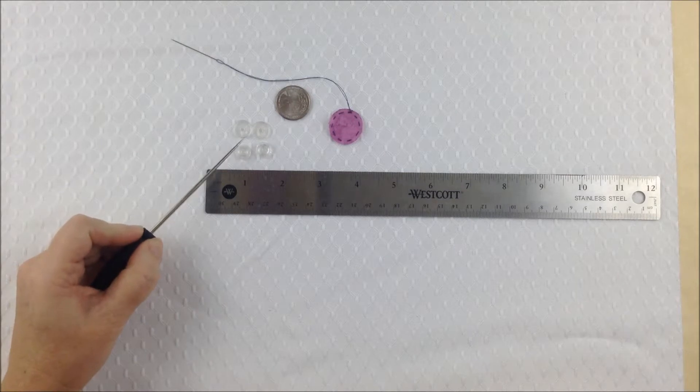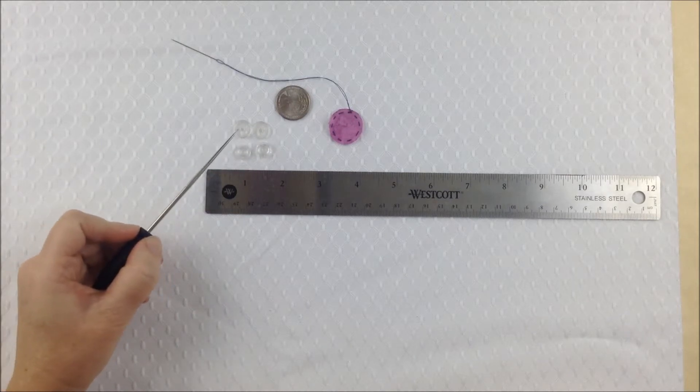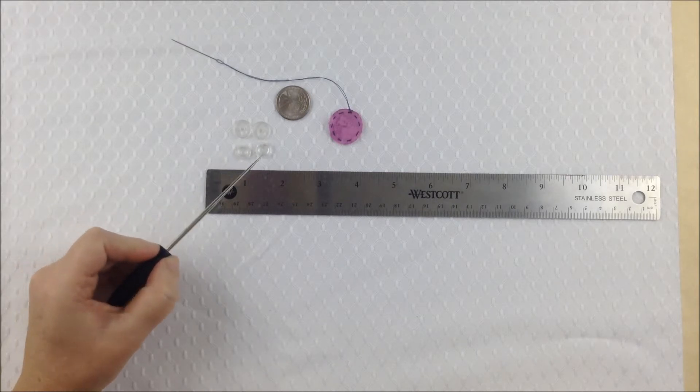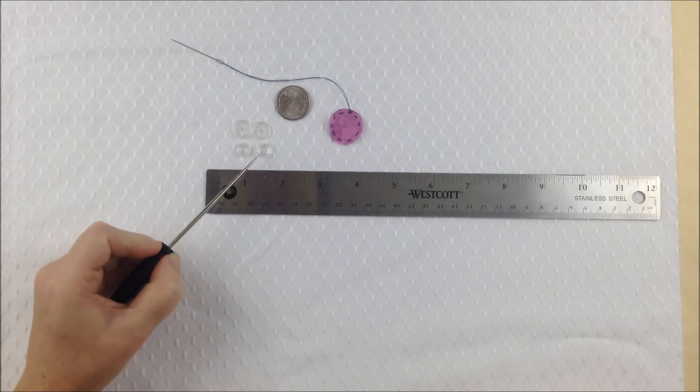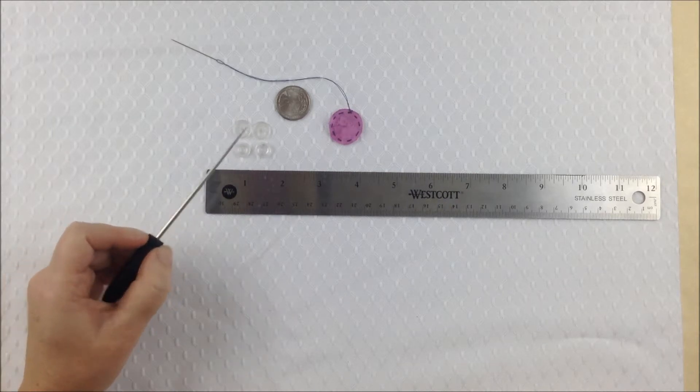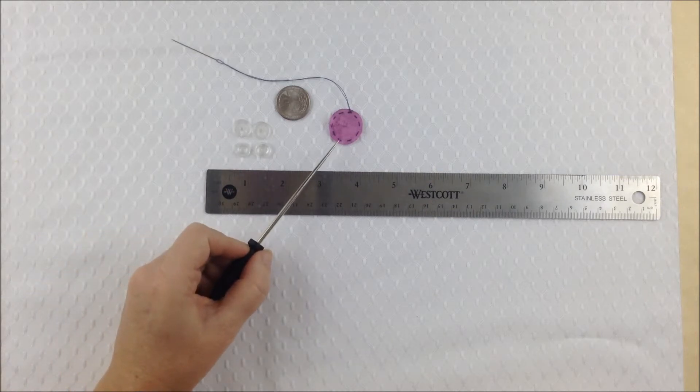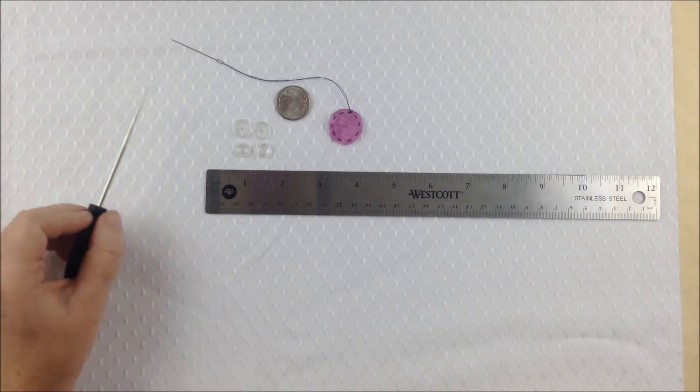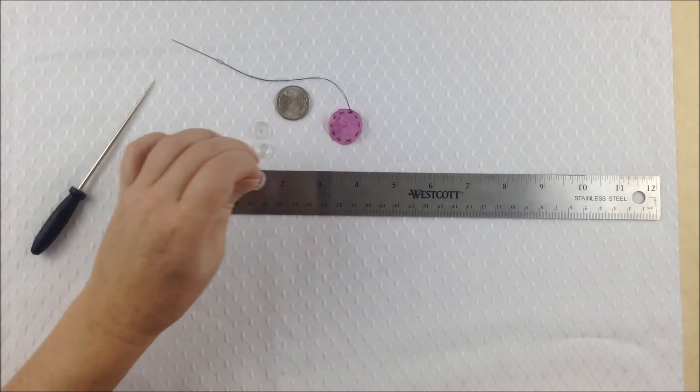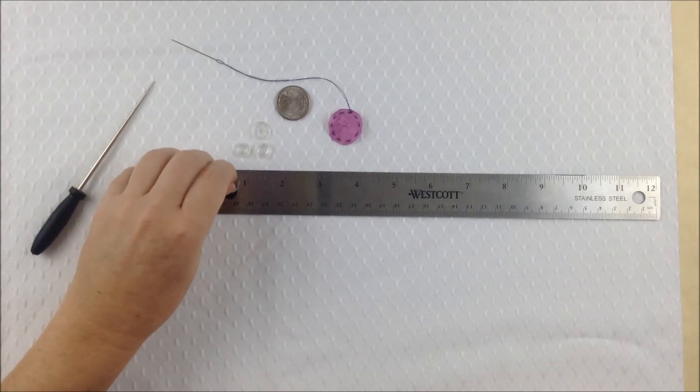So the cam snap comes with four pieces. Two pieces that have a post and they're both exactly the same. The other two pieces are a male part and a female part and they both snap together. We only need to cover one of the post parts with fabric. And cam snaps come in all different sizes so you'll need to accommodate your fabric according to the size of your post piece.